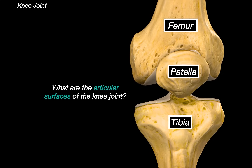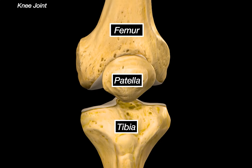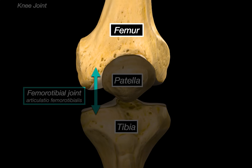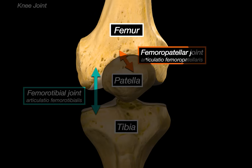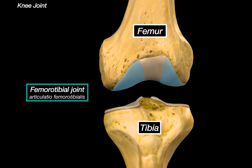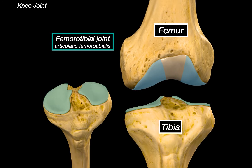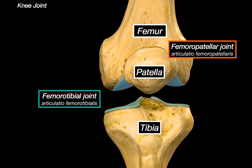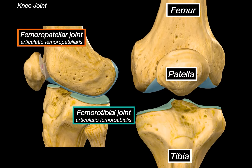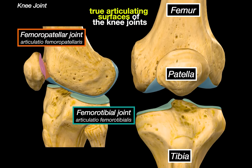So what are the actual articulating surfaces of the knee joint? There are two main ones. The first is the femorotibial joint, which is between the distal end of the femur and the proximal end of the tibia. The second is the femoropatellar joint, which is between the femur and the back surface of the patella. We can see the two curved condylar surfaces of the femur articulating with the relatively flat articular surface of the tibia. Switching to a superior view, we can see those tibial surfaces more clearly. The anterior side of the femur facing the patella is the femoropatellar joint — these are the true direct articulating surfaces of the knee joint.